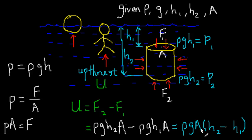Let's think about the meaning of h2 minus h1 physically. h2 minus h1 is the depth of the bottom face minus the depth of the top face. But this gives us the length of the cylinder. h2 minus h1 is actually the length of the cylinder.